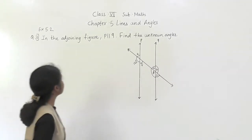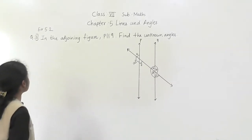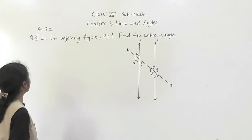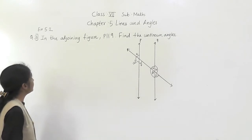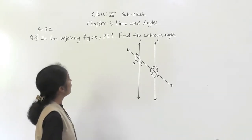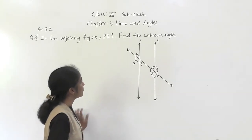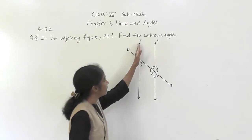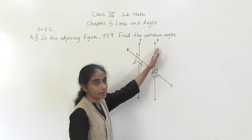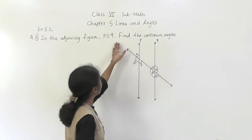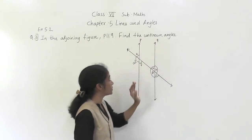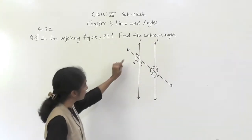Hello everyone. Let's start exercise 5.2, question number 3. In the adjoining figure, P is parallel to Q. See P and Q are parallel lines. Find the unknown angles.